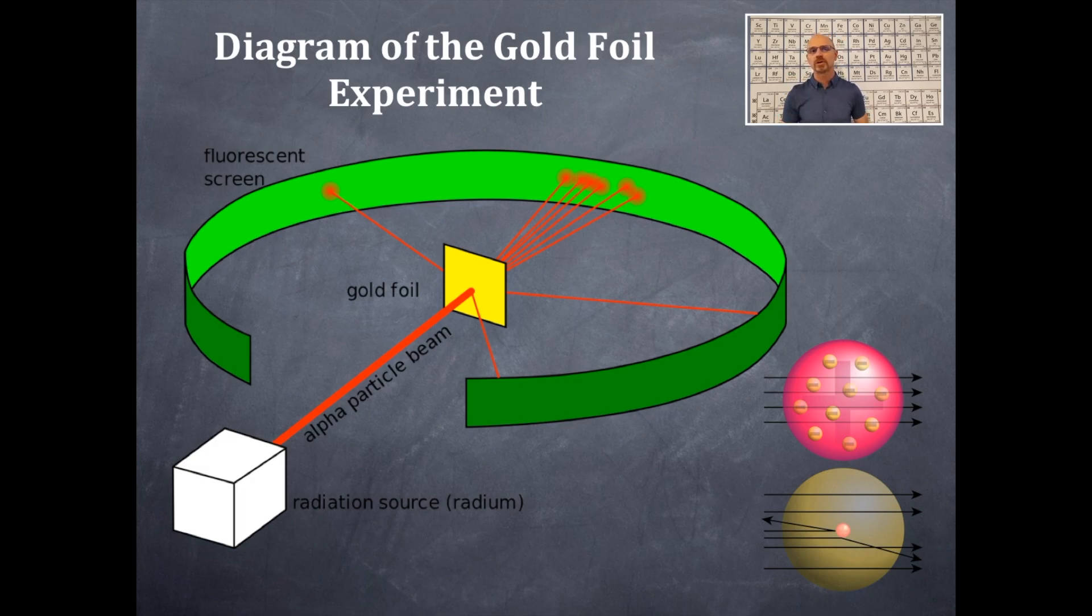That was crucial. Ernest Rutherford did this experiment multiple times, like all scientists do, so that they could repeat those results over and over again. Because he was trying to prove another model. And it didn't work out that way. So he had to redesign his model based on the data. It's all based on the data.